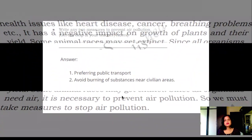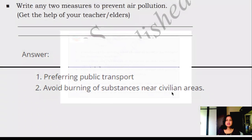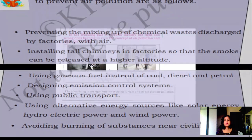We must take measures to stop air pollution. Two measures: prefer public transport, and avoid burning substances near civilian areas. Other measures include preventing chemical waste from factories mixing with air, installing tall chimneys so smoke is released at higher altitude, using gaseous fuel instead of coal, diesel, or petrol, designing emission control systems, using alternative energy sources like solar energy, hydroelectric power, and wind power.